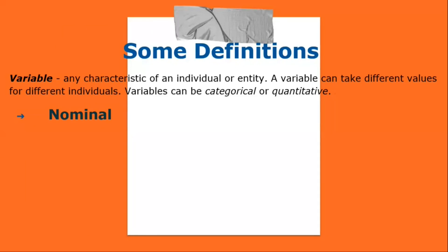Ordinal: variables with an inherent rank or order — e.g., mild, moderate, severe. They can be compared for equality, or greater/less, but not by how much. Interval: values of the variable are ordered as in ordinal, and additionally differences between values are meaningful; however, the scale is not absolutely anchored. Calendar dates and temperatures on the Fahrenheit scale are examples. Addition and subtraction, but not multiplication and division, are meaningful operations.